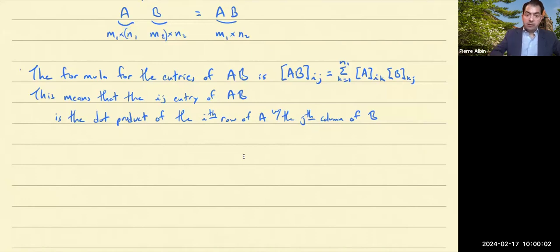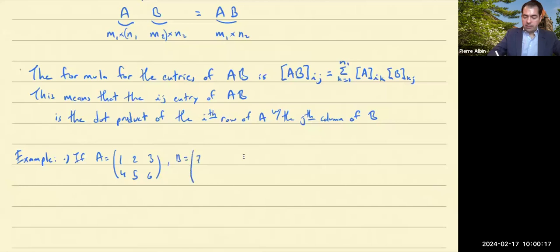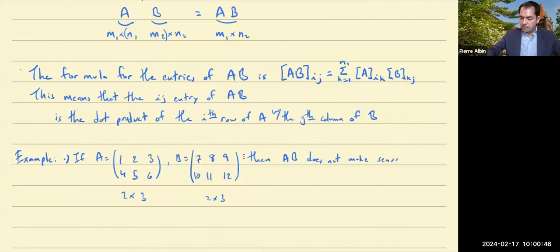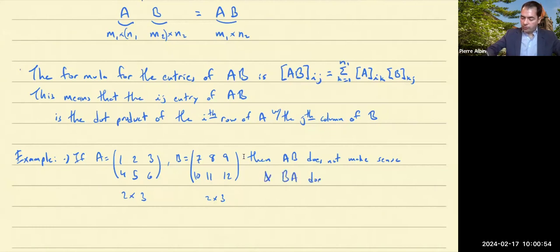Let's start with an example where the product doesn't make sense. If A is the matrix 1, 2, 3, 4, 5, 6 and B is 7, 8, 9, 10, 11, 12 — both are 2 by 3 matrices. Since the inner dimensions don't match (3 ≠ 2), A times B doesn't make sense, and B times A also does not make sense.